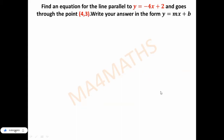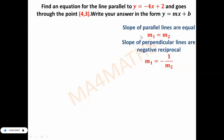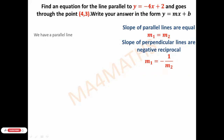Let's start the solution. Always remember this formula: if two lines are parallel, their slopes are always equal. If the lines are perpendicular, then the slope of one is equal to the negative reciprocal of the other. But in this case we have a parallel line, so our slope will always be equal to the slope of the other line.